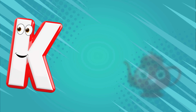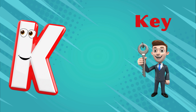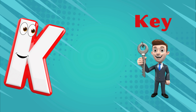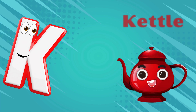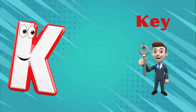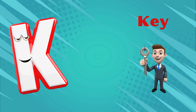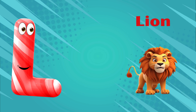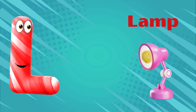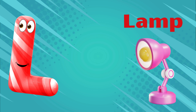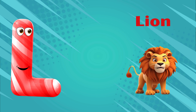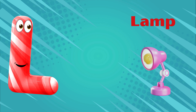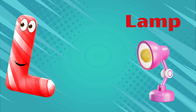K is for cattle, k-k-cattle. K is for key, k-k-key. K is for k-k-k-cattle. K is for k-k-k-key. L is for lion, l-l-lion. L is for lamb, l-l-lamb. L is for l-l-l-lion. L is for l-l-l-lamb.